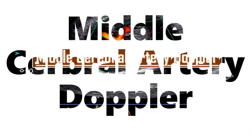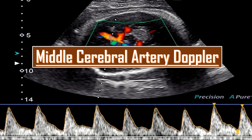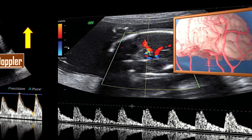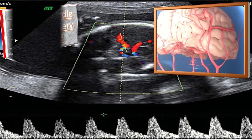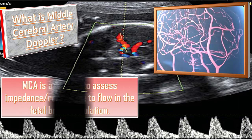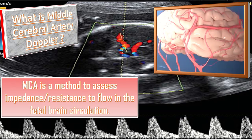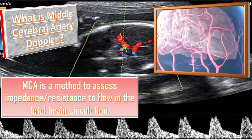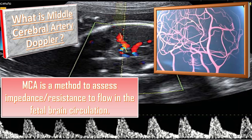The topic of our discussion today is Middle Cerebral Artery Doppler. We have already discussed the umbilical artery Doppler and uterine artery Dopplers, and you can find their links by clicking on the 'i' button in the top right corner of this video. Doppler velocity of the middle cerebral artery is a method to assess the impedance or resistance to flow in fetal brain circulation.